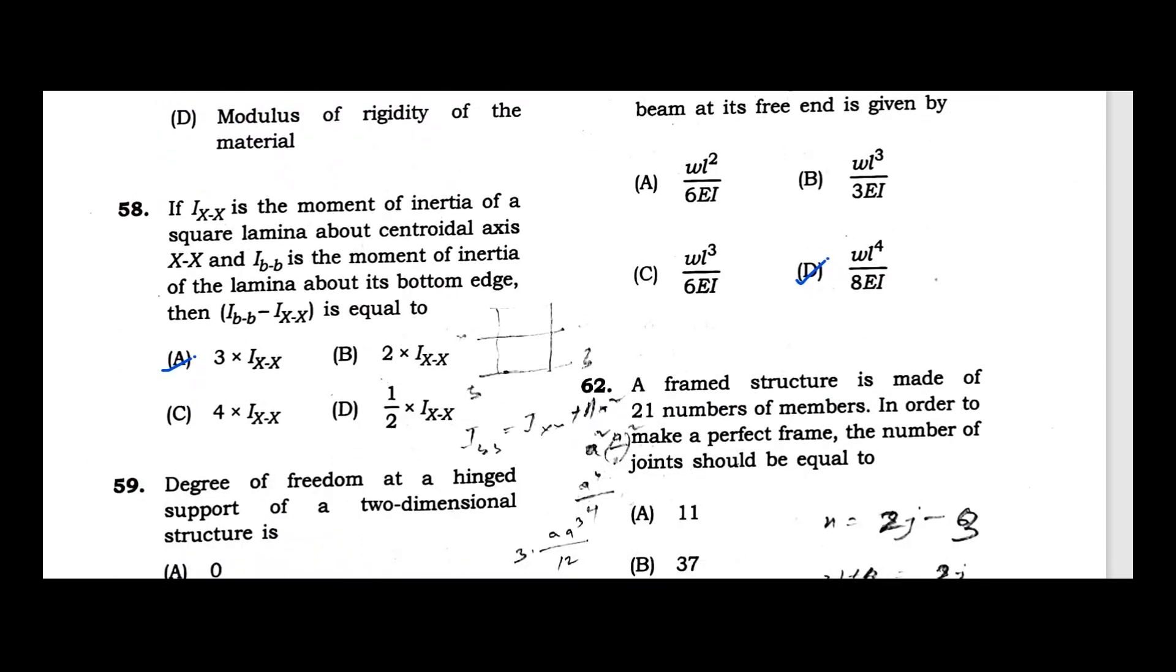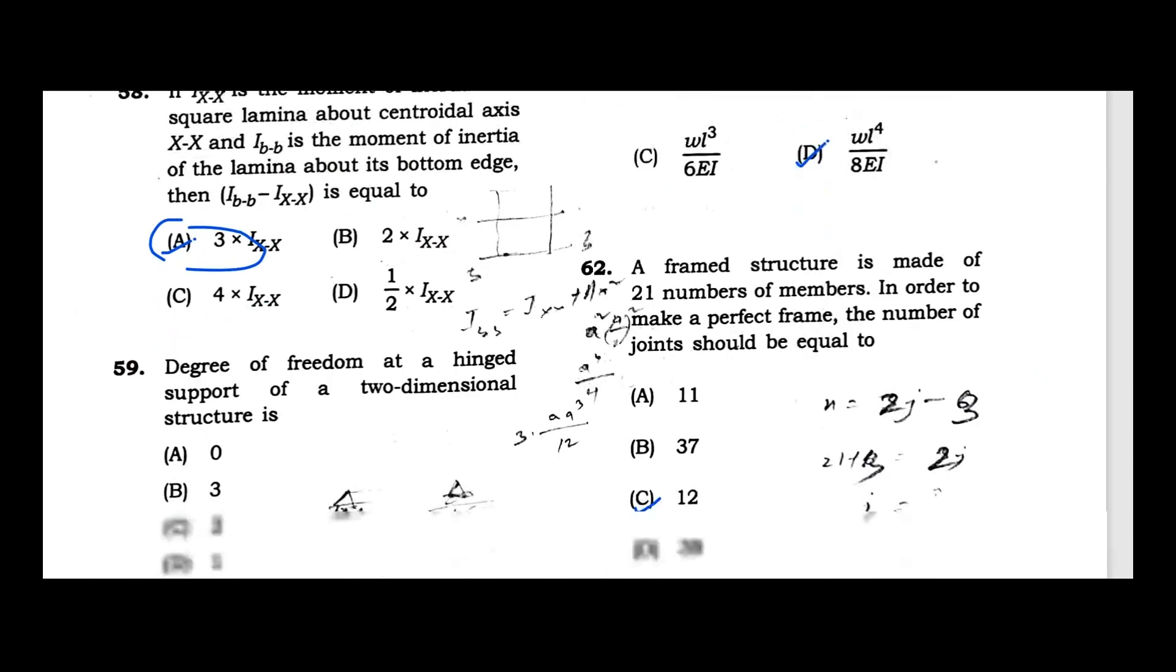Question 58: If Ixx is the moment of inertia of square lamina about centroidal axis and IBB is the moment of inertia of lamina about the bottom axis, then IBB/Ixx is equal to? The moment of inertia is 3 times as compared to the centroidal axis in case of square lamina. Option A is the correct answer.